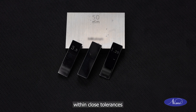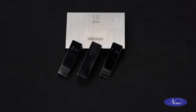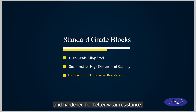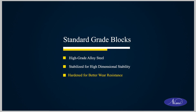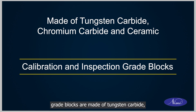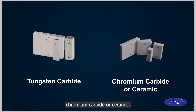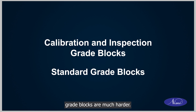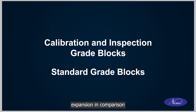For high degree of accuracy, standard grade blocks are made of high-grade alloy steel, stabilized for high dimensional stability and hardened for better wear resistance. Calibration and inspection grade blocks are made of tungsten carbide, chromium carbide, or ceramic, which are much harder with high wear resistance and low thermal expansion in comparison with standard grade blocks.